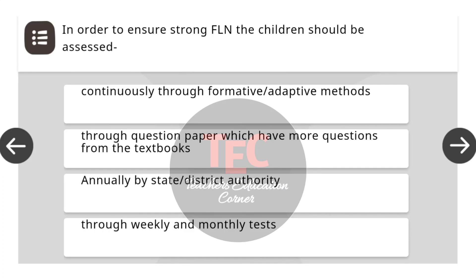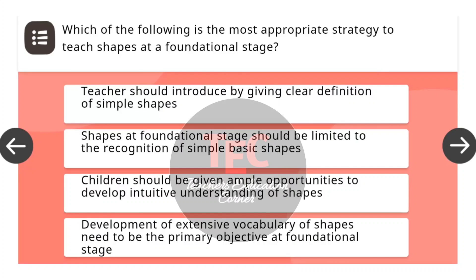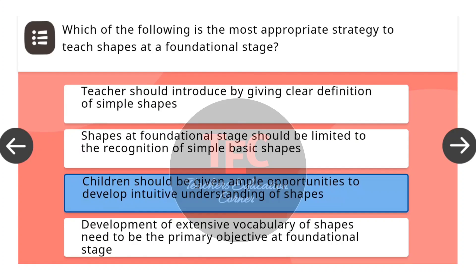Next question: In order to ensure strong FLN, the children should be assessed — the correct answer is continuously through formative adaptive methods. Next question: Which of the following is the most appropriate strategy to teach shapes at the foundational stage? The correct answer is children should be given ample opportunities to develop intuitive understanding of shapes.